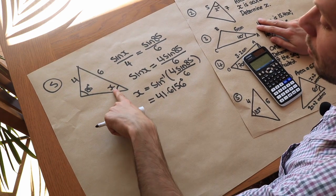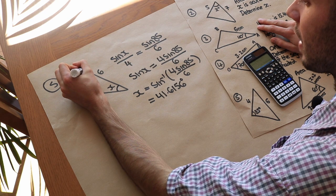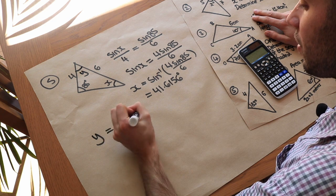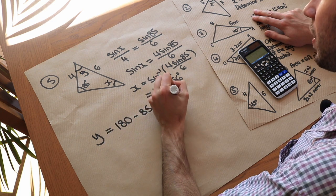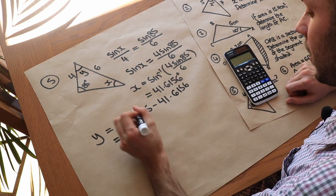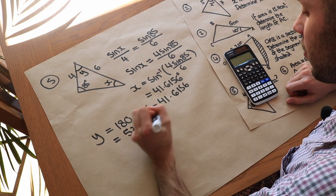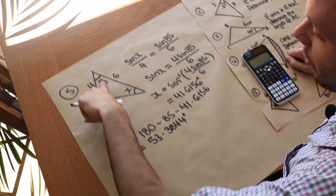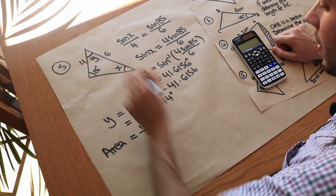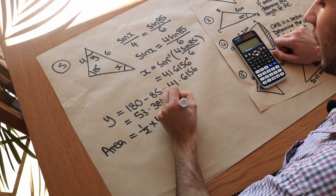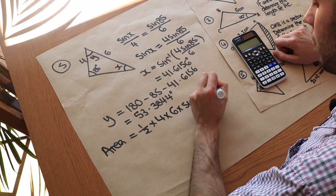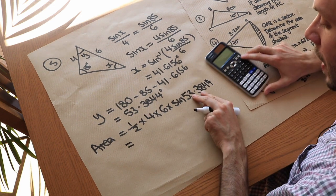Knowing two angles, we find the third: y equals 180 minus 85 minus 41.6156, giving 53.3844 degrees. Now we have an angle between two known sides, so the area is half times one side times the other times sine of 53.3844 degrees. Do not use a rounded value for that angle.